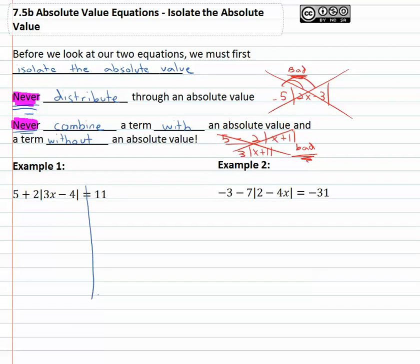With that in mind, let's take a look at solving this equation: five plus two times the absolute value of three x minus four equals eleven. The catch is the absolute value is not alone, so we can't do the positive or negative eleven thing yet. We get it alone by getting rid of the five and the two, just like if the equation was five plus two y equals eleven — notice the y is replacing the absolute value part. We're going to solve both of these the same way, getting rid of the five by subtracting and then getting rid of the two.